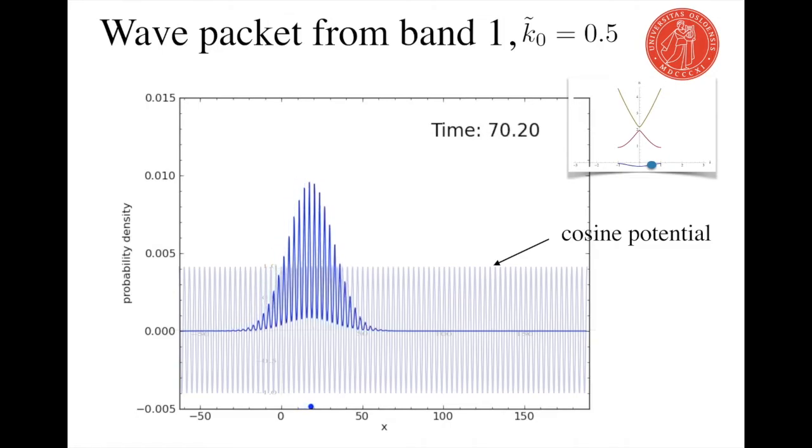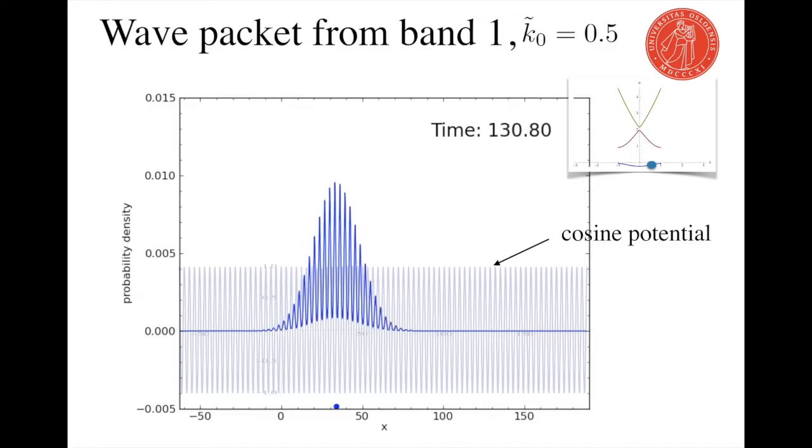And here you can see how the particle evolves in time. It moves at a constant speed, which in fact is equal to the slope of the energy dispersion at k0.